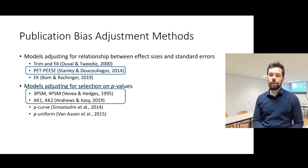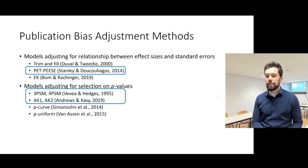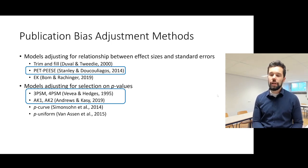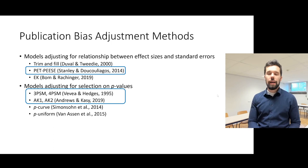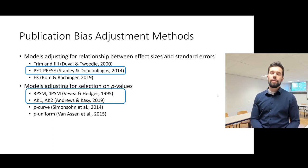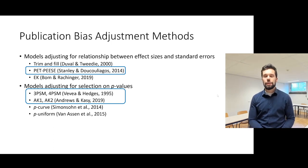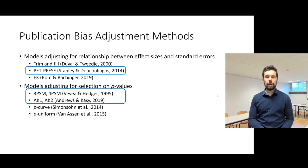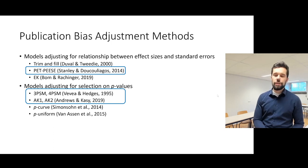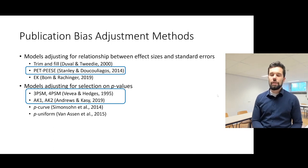Within the ROBMA framework, we incorporate WEP-piece, which conditionally adjusts for the relationship between effect sizes and standard errors or standard errors squared, and PSM — publication selection models — which adjusts for different publication bias probabilities in different p-value intervals, such as marginally significant or non-significant p-values.